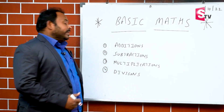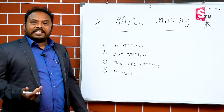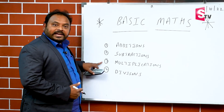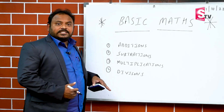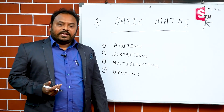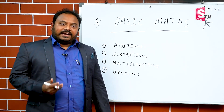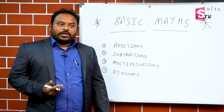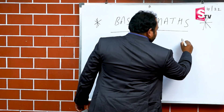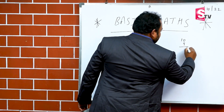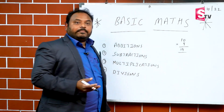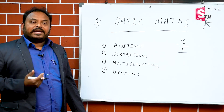The main thing for basic math is additions, subtractions, multiplications, and divisions. For additions, take 10 plus 9. Students are thinking about that — they don't want to say 19 directly. They have a plus symbol and then 19.